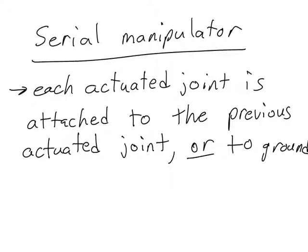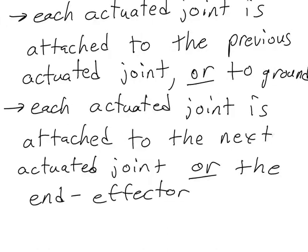In a serial manipulator, each of our actuated joints is attached to the previous actuated joint, or if it is the first actuated joint, it's attached to ground. Similarly, each actuated joint is also attached to the next actuated joint, or it's attached to the end effector if it's the last actuated joint.